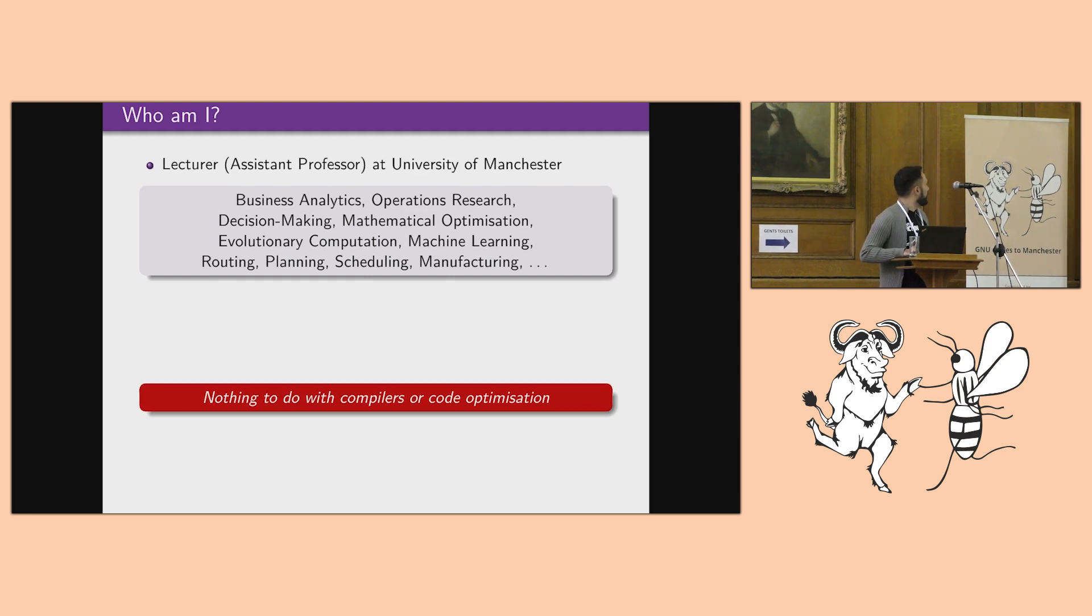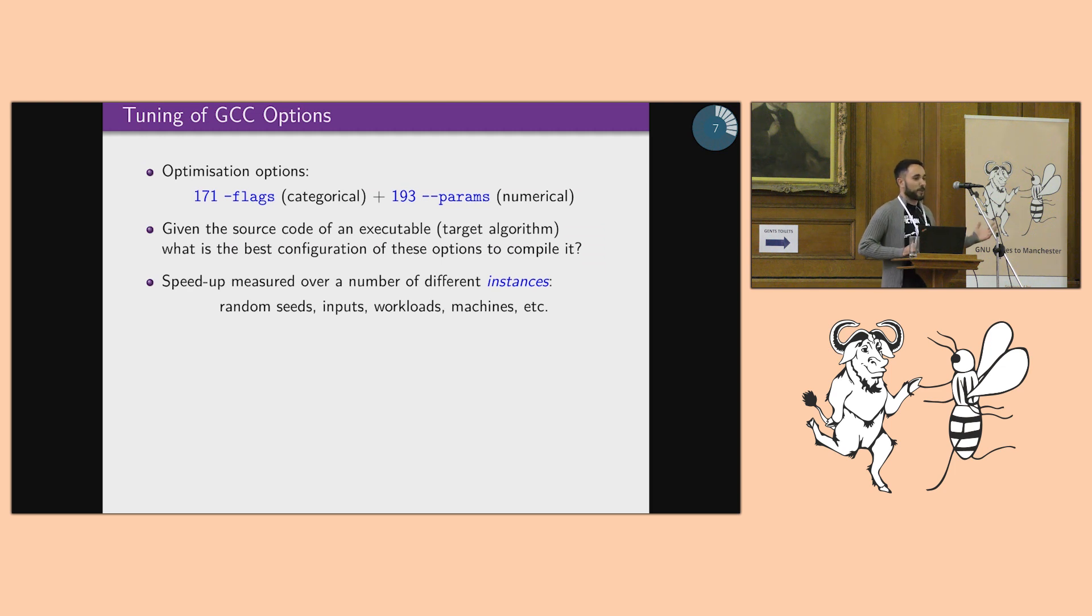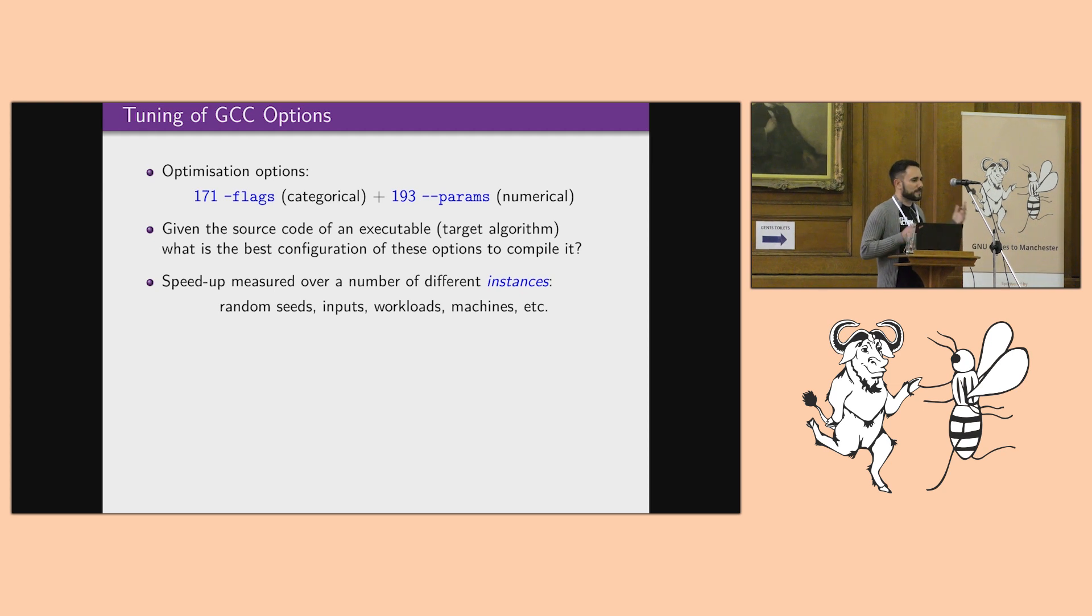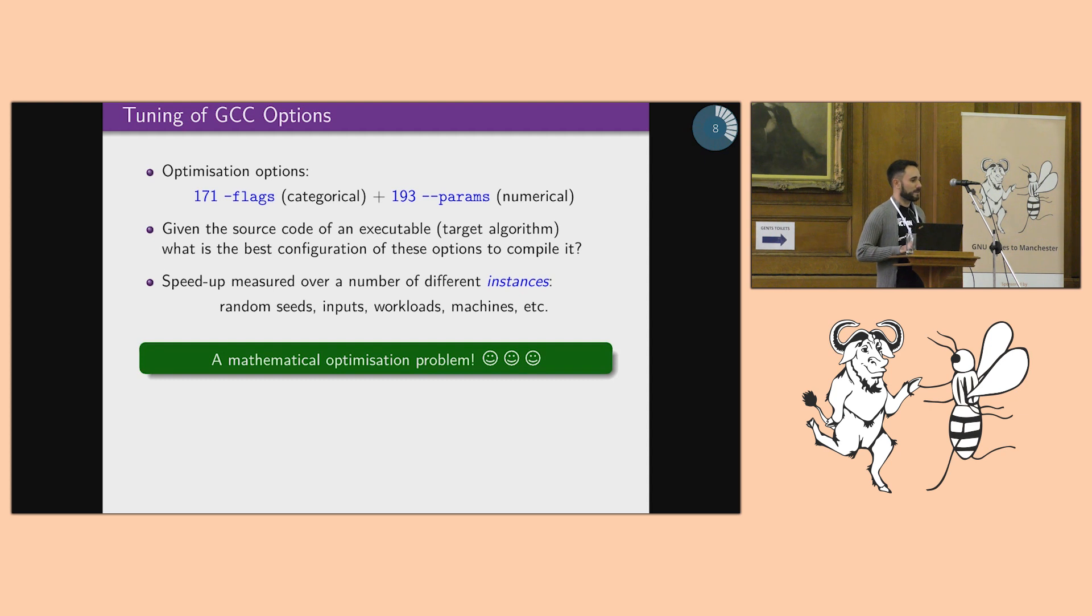But if you look at GCC, GCC even for optimization only has plenty of options that control optimization. One question that you might ask is given a source code of an executable, that let's call it the target algorithm, what is the best configuration of these options to compile? You can measure how well you are doing by measuring the speedup on different, let's call it instances. And what I mean by instances is random seeds, inputs, different workloads, different machines. This is actually a mathematical optimization problem.